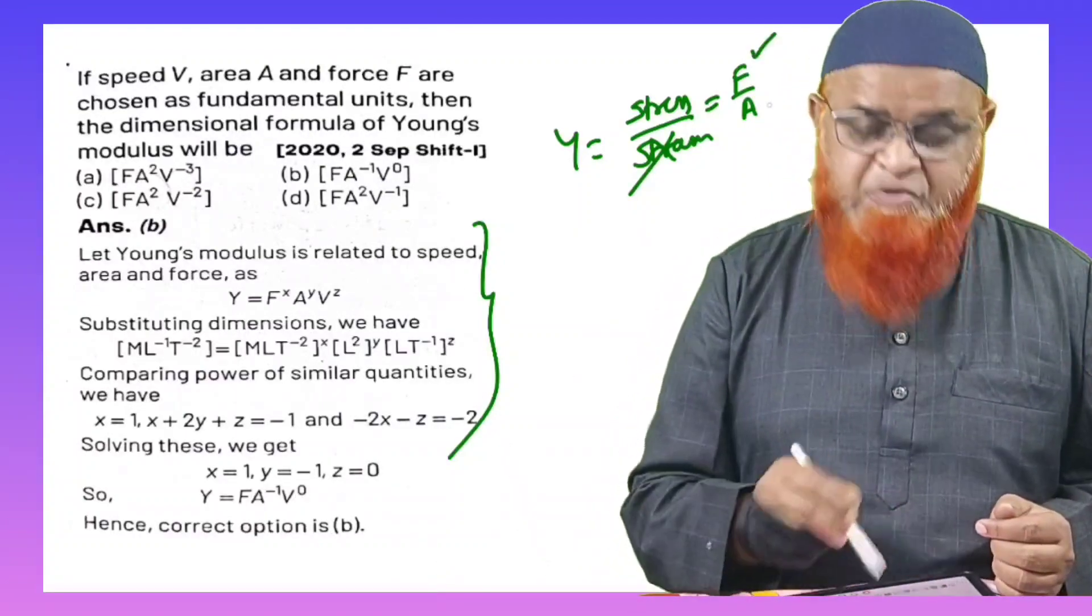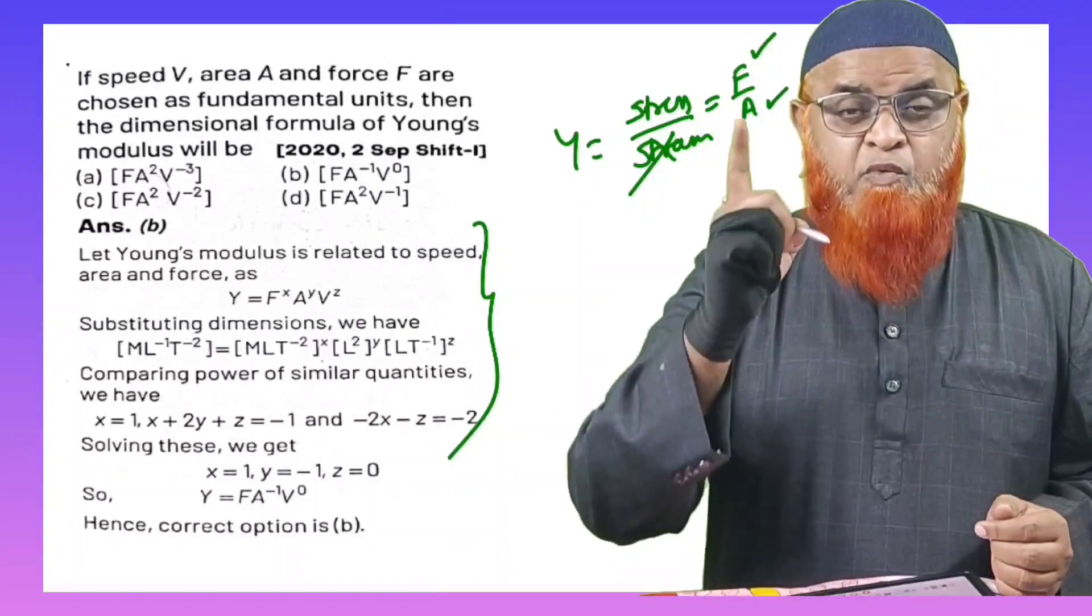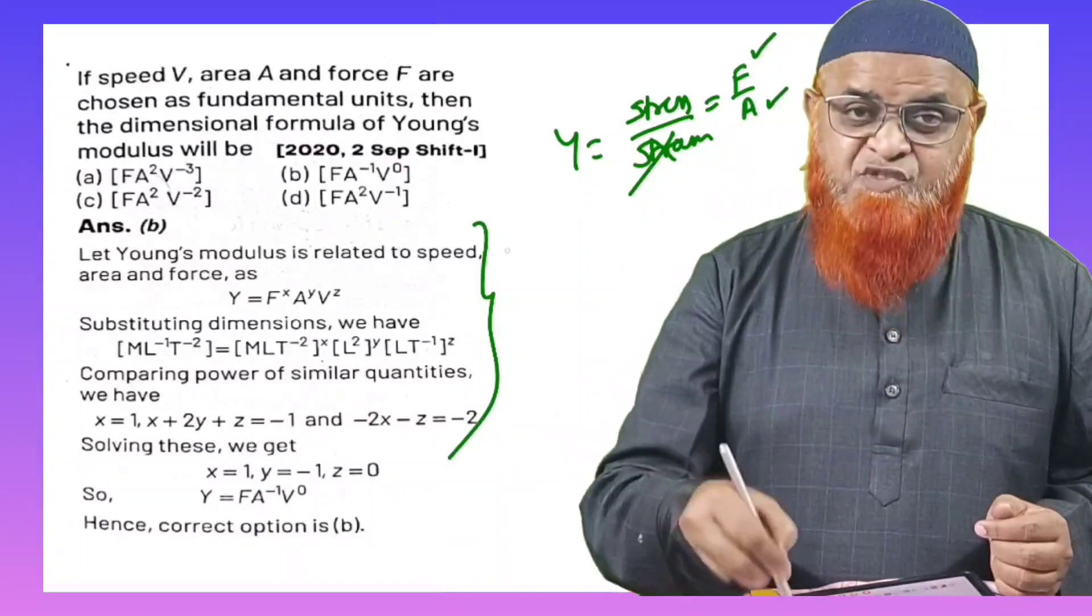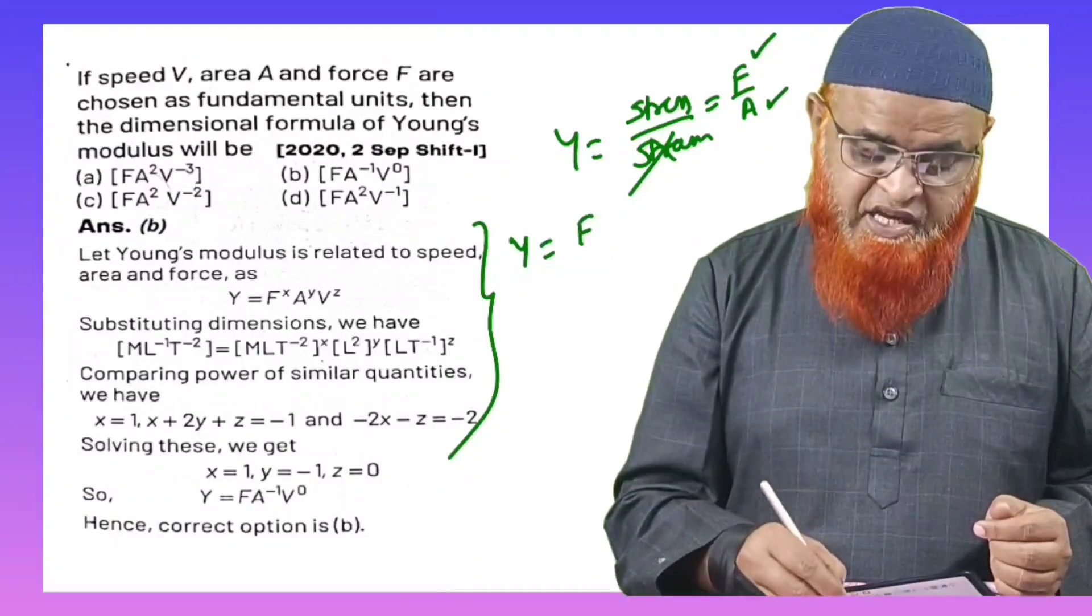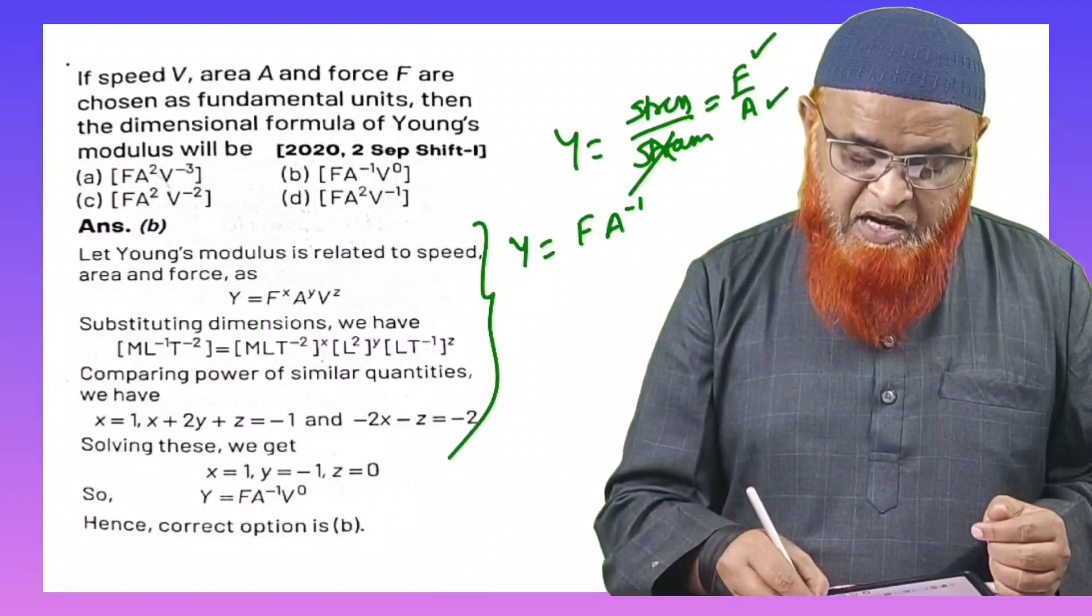And in this problem, if you see the four options, force is present, area is present, but velocity is missing in this formula. Here there is no velocity. So can I write this as F, denominator A is there. A will come to the numerator power of minus one.